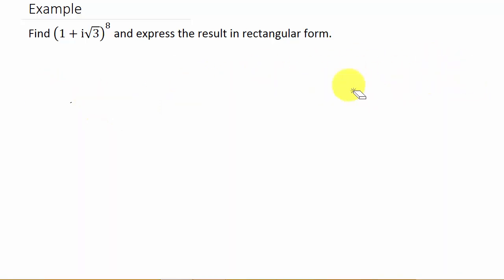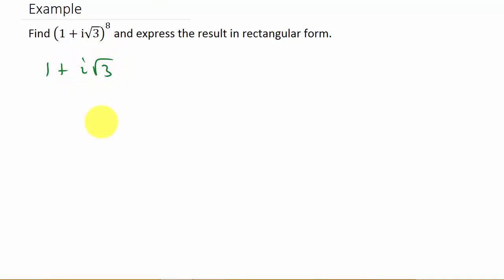But what De Moivre's Theorem does is it says: if we can convert this to trigonometric form, then we can use that theorem and it makes it much easier. If you're not sure how to convert to trigonometric form, you should have covered it by now if you're at this point in trig, but I have some videos on converting to trigonometric form — you can check those out.